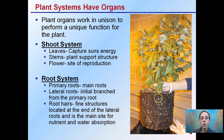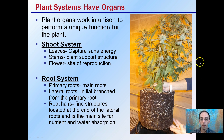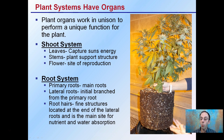The plant organs work in unison to perform a unique function for the plant. The shoot system that we typically see above ground includes the leaves, the stems, and the flower. Leaves capture the sun's energy, the stems support the plant structure, and the flower is the site of reproduction.